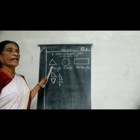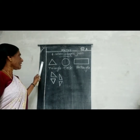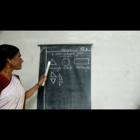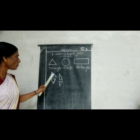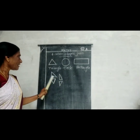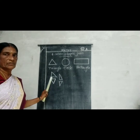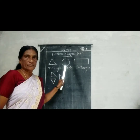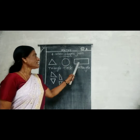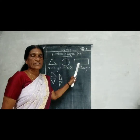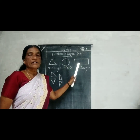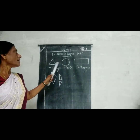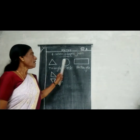This is a triangle. A triangle has three sides. This is a circle. As you know, isn't it? This is a rectangle. These are the shapes you have to understand: triangle, circle, rectangle.